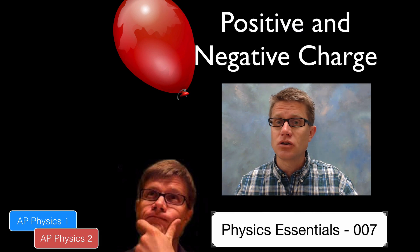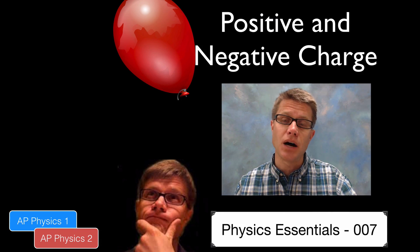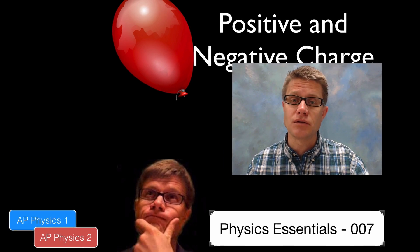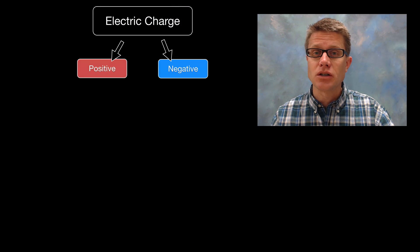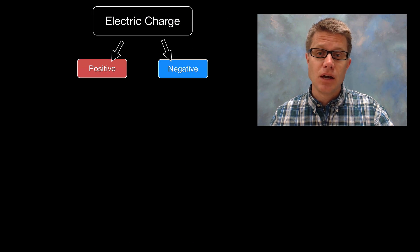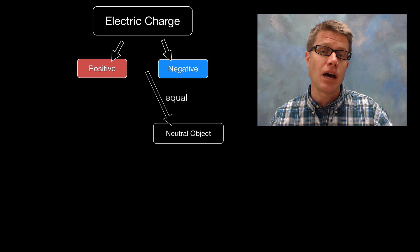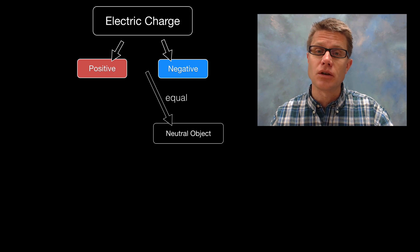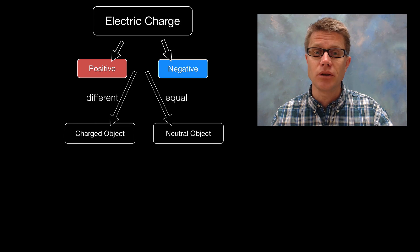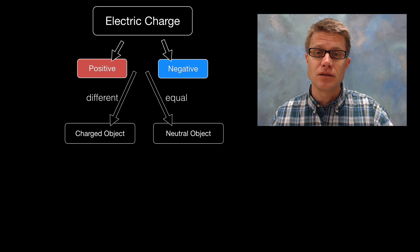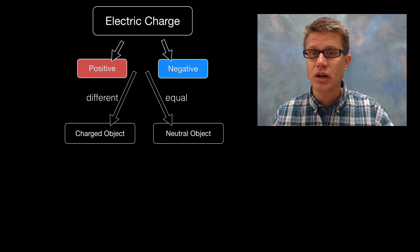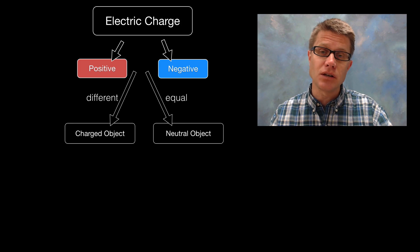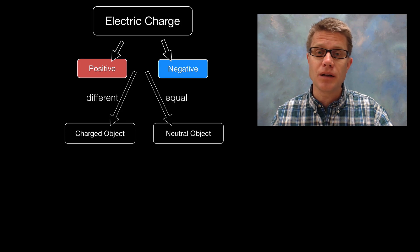Scientists speculated there are two types of charges, and we call those positive and negative charges. An electric charge can be positive or negative. If we have a neutral object it's going to have an equal amount of each of those different charges. But if it's a charged object, like a balloon, it's going to have differences in the number of electric charges. If it's a negatively charged object it's going to have more of the negative charges, and if it's a positively charged object it's going to have more of the positives.